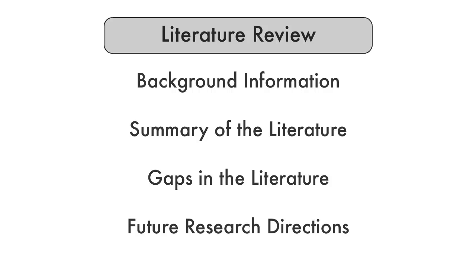Not all literature reviews follow the exact same structure, but generally speaking, a literature review should include background information about the subject, a summary of the current body of knowledge, any gaps or unexplored avenues in the research, and potential next steps for research surrounding the subject.